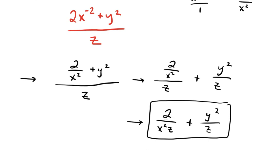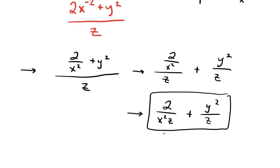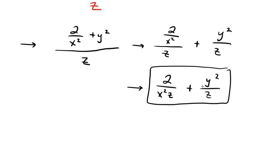You could make these into a common denominator. If you wanted to do that, you would have to multiply this on the top and bottom by x squared and add them together. So also a fine answer would be 2 plus x squared y squared all over x squared z. This is exactly the same as the answer above, just written together in a single fraction.